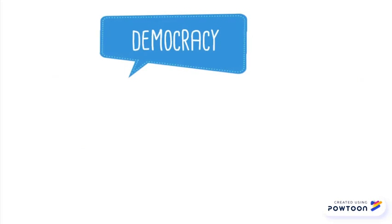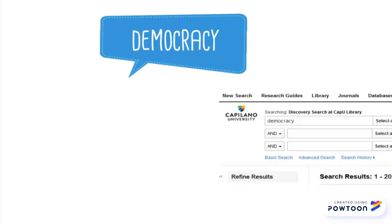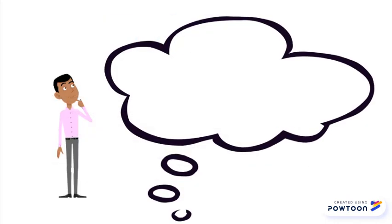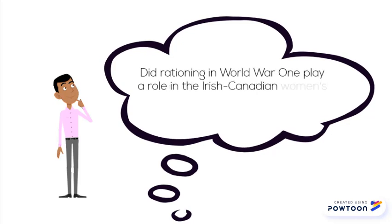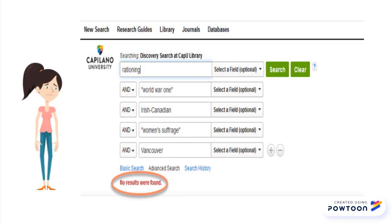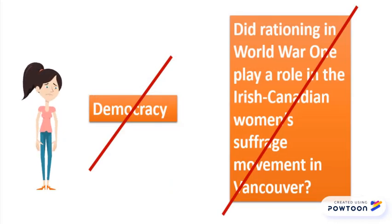Consider democracy. On its own, democracy as a topic is too broad. If you try searching for it as a keyword, you'll get a massive results list with research coming from many different disciplines. Alternatively, what do you think will happen if you try to research a topic like 'Did rationing in World War I play a role in the Irish Canadian women's suffrage movement in Vancouver?' Clearly, neither are topics you can do justice to in a term paper.